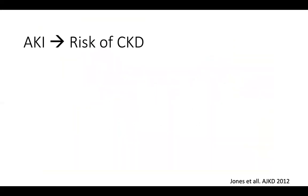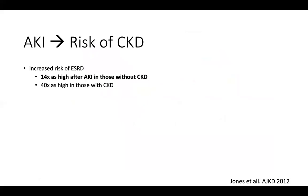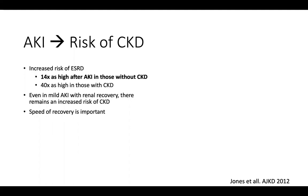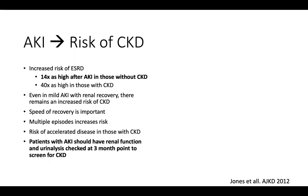The risk of CKD is 14 times as high after AKI. In those with CKD, there's an even higher risk of progressing to end-stage renal disease, as AKI increases the rapidity of CKD progression. Even mild AKI with renal recovery carries a downstream risk of CKD, though recovery does reduce the risk — and multiple episodes certainly increase it. People who've had an AKI, even mild, should be screened for CKD with urinalysis and renal function checked three months after the event.